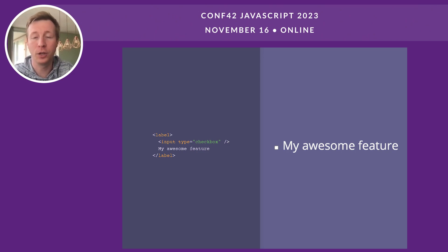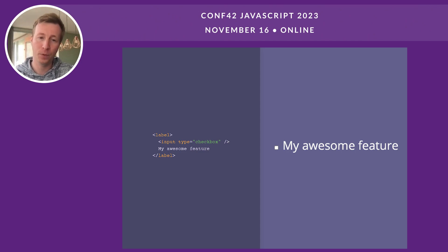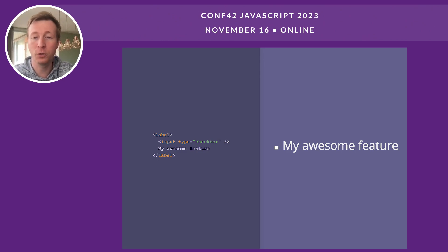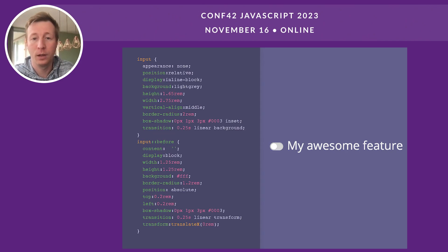The HTML is pretty simple: there's a label and inside of it there is a checkbox. Having the input inside the label gives us things for free — the browser associates the input and label so you can click anywhere in the label to toggle the checkbox. But of course we can't ship just this checkbox because it doesn't look like a toggle, so we'll make it look like one with CSS.